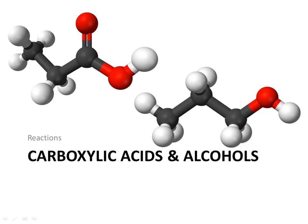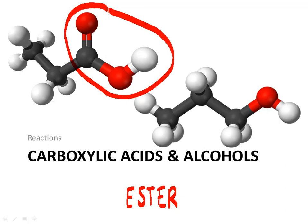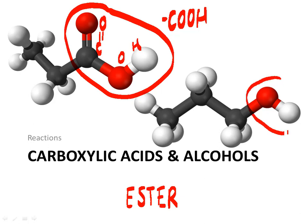Carboxylic acids and alcohols react with one another to form an ester. The carboxylic acid can be recognized by its carboxyl functional group, COOH — the C is bonded by a double bond to an O, and then there is the OH. An alcohol can be recognized by its functional group OH, the hydroxyl functional group.